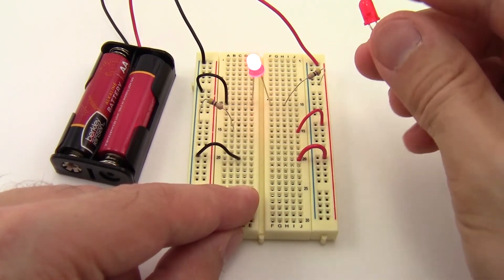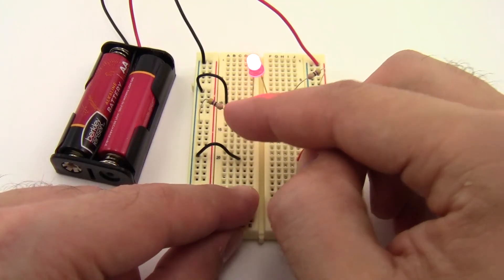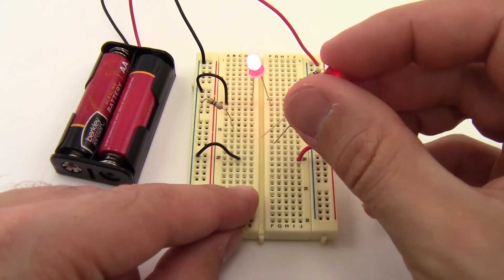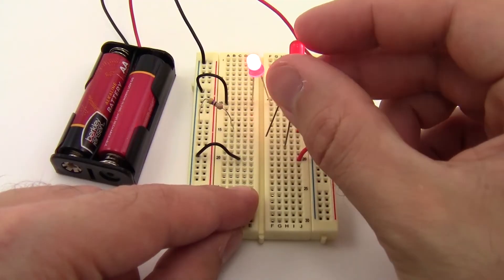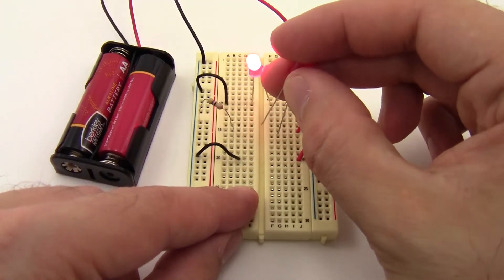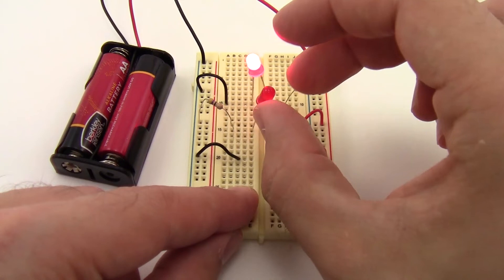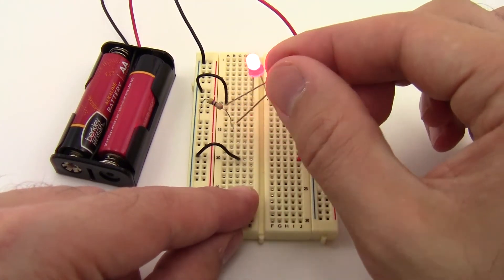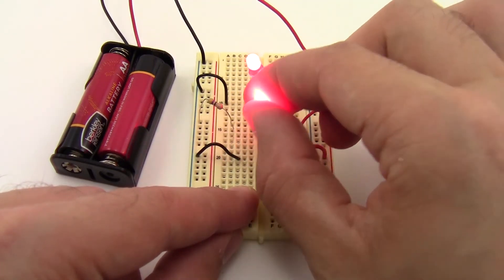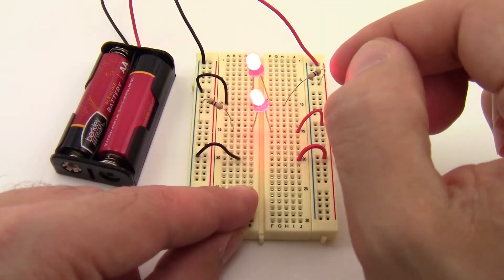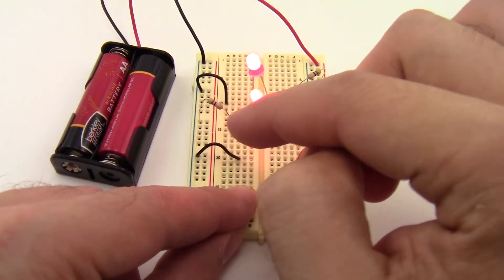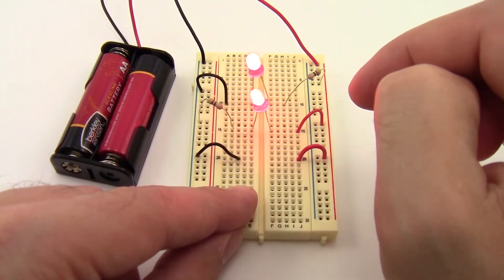What confuses a lot of people is that you can also have this current limiting resistor on the negative side. I can put the LED in here, but do remember that LEDs are polar, so if you get the LED backwards, it's not going to light up at all. You have to have the long leg of the LED on the positive side. That LED still lights up and it doesn't burn out, again because this resistor is limiting the current flowing through the LED.